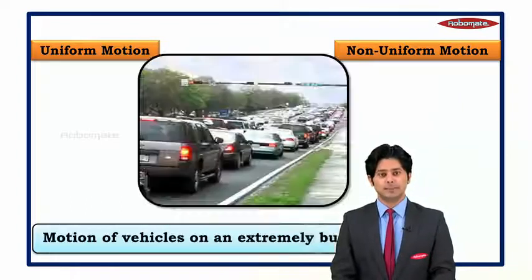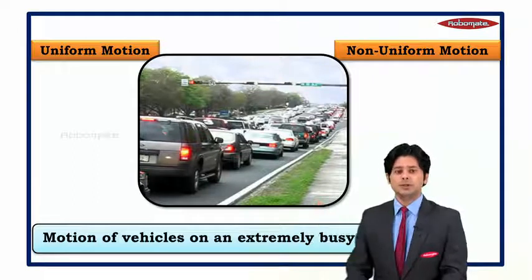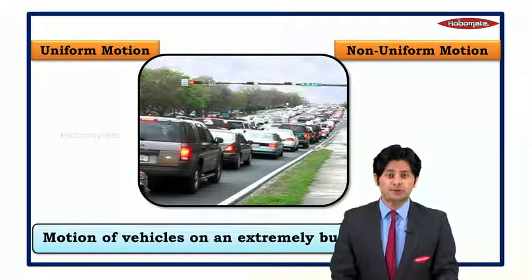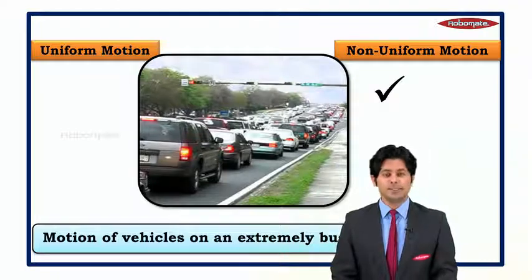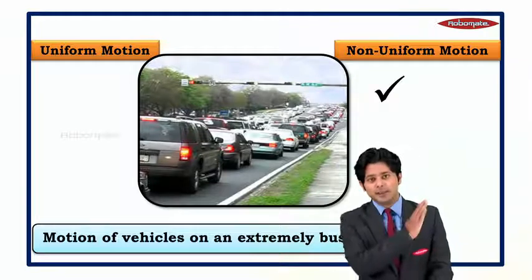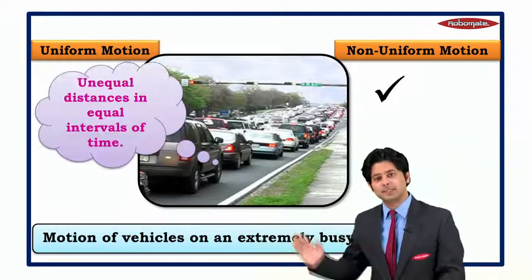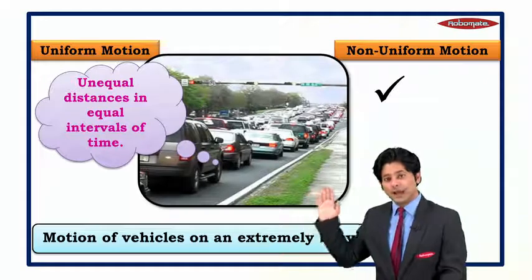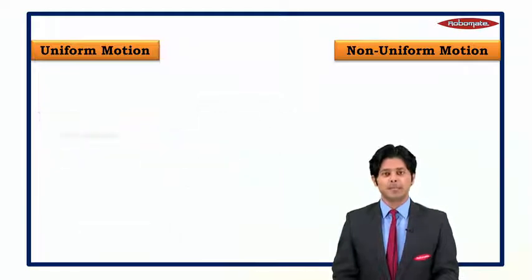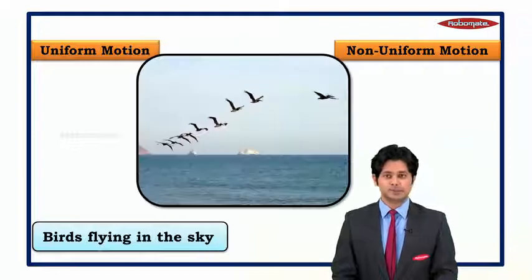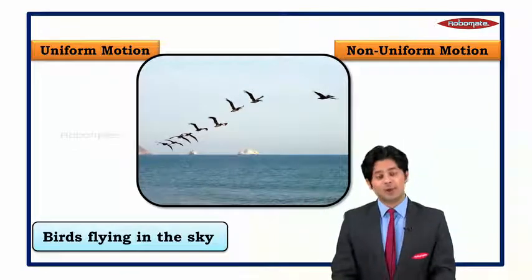Moving to the next example: the motion of a vehicle on an extremely busy road. Is it uniform or non-uniform? The answer is obviously non-uniform motion, because it covers unequal distance in equal interval of time.